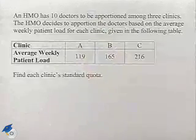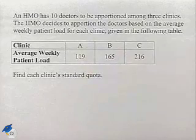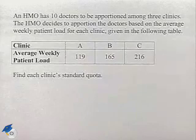Now let's see how to find the standard quota. An HMO has 10 doctors to be apportioned among three clinics. The HMO decides to apportion the doctors based on the average weekly patient load for each clinic given in the following table.